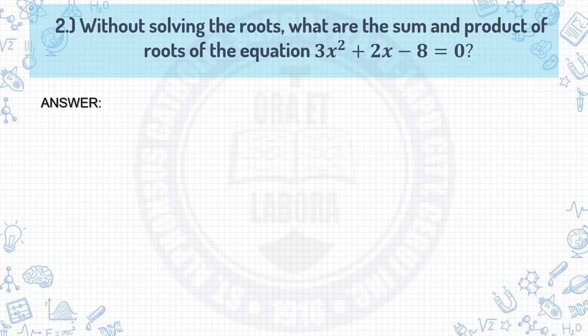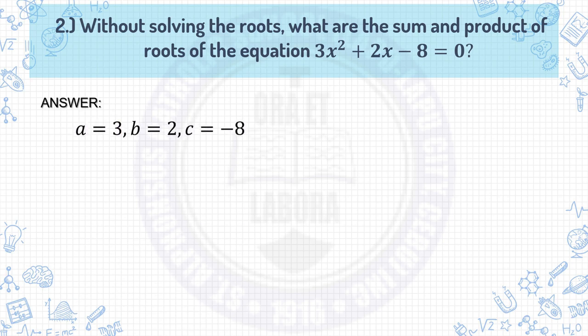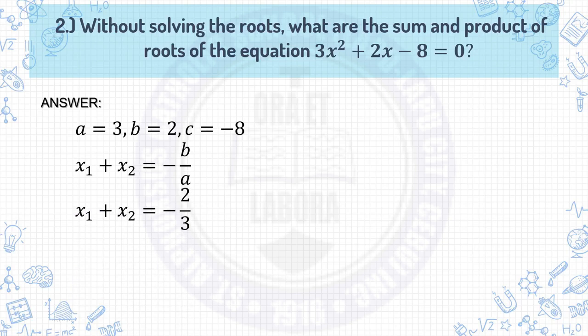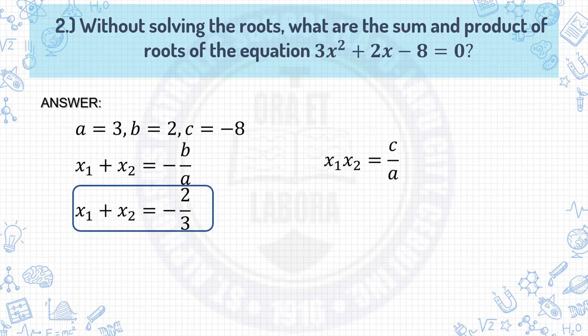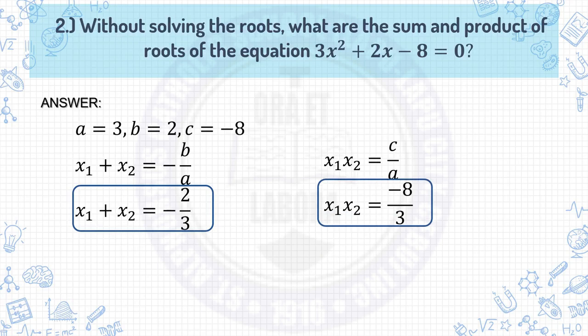Example number 2: Without solving the roots, what are the sum and the product of the roots of the equation 3x² plus 2x minus 8 equals 0? Make sure the given is in general form before identifying the values of a, b, and c. Here, a is 3, b is 2, and c is negative 8. For the sum: x₁ plus x₂ equals negative b over a. Substituting, b is 2 and a is 3, so x₁ plus x₂ equals negative 2 thirds. For the product: x₁ times x₂ equals c over a. Substituting, c is negative 8 and a is 3, giving negative 8 over 3 as the product. Make sure to simplify your answers.